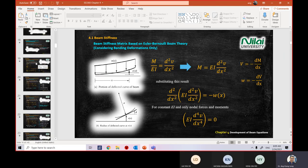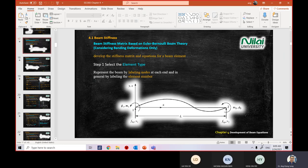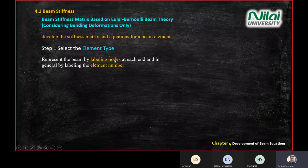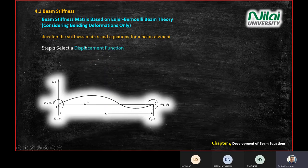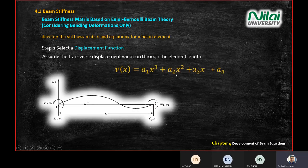There are steps when we derive the beam stiffness. Step 1 is to label the location, nodes, and element numbers — the same as we've done so far. Step 2 is to choose a displacement function. We use a polynomial equation: a₁x³ + a₂x² + a₃x + a₄, going up to the power of three.